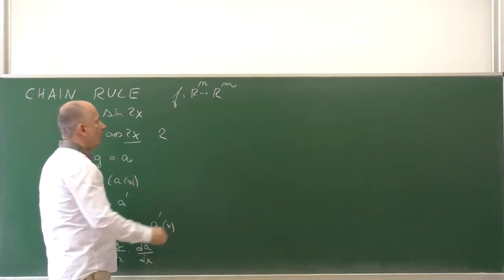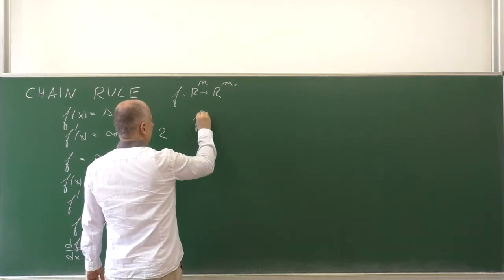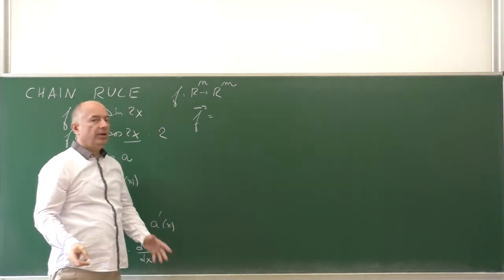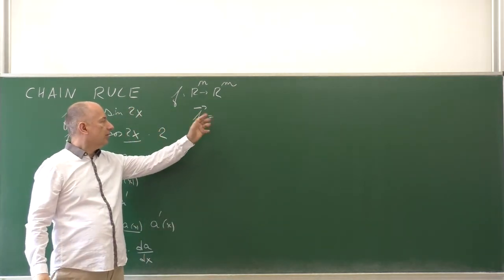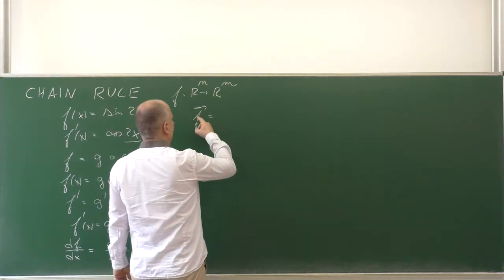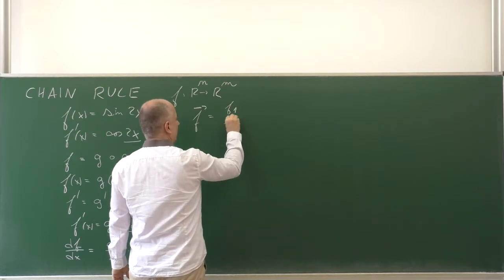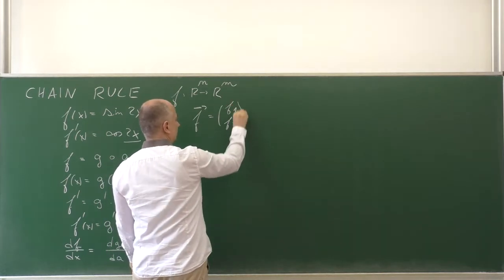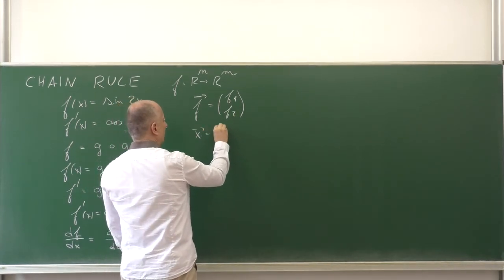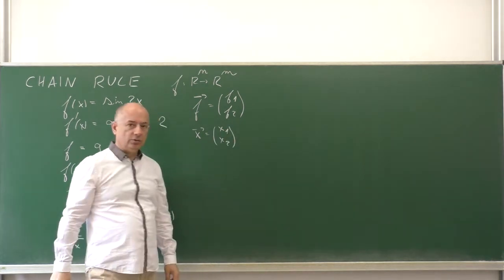Let me give you an example. To have some simple example, let's consider n = 2 and m = 2. So f⃗ as a vector will have two components, f₁ and f₂. And the argument x⃗ will have two components, x₁ and x₂. I have chosen 2,2, but the dimensions, the number of components may be different.